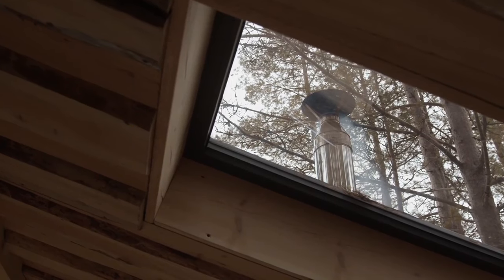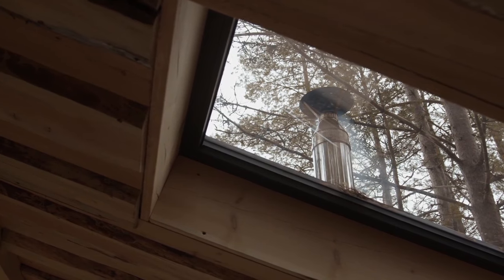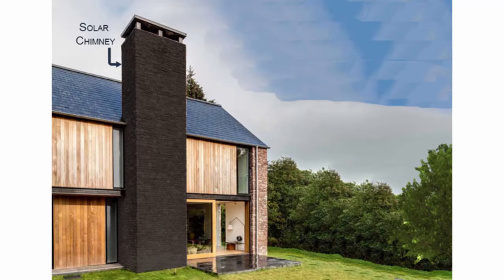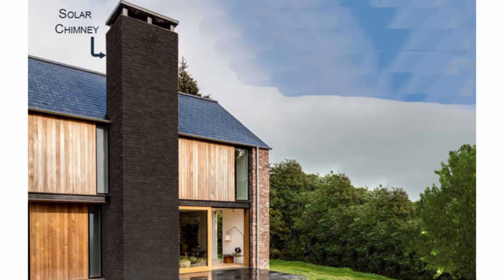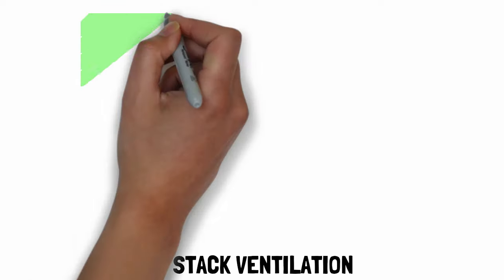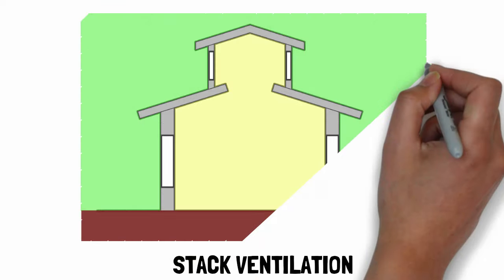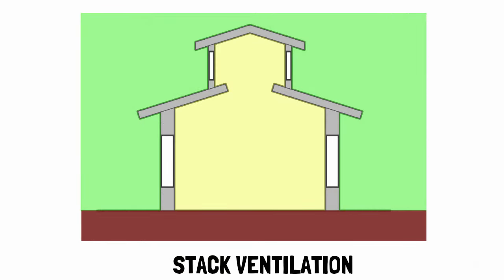Solar chimney is a natural way of ventilation of buildings using passive solar energy. It is a vertical shaft utilizing solar energy to enhance natural stack ventilation through a building. When cool air enters the building through the indoor environment, it becomes warm and rises up because hot air is lighter than cool air.